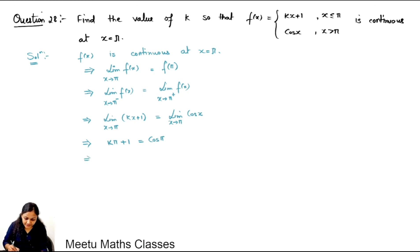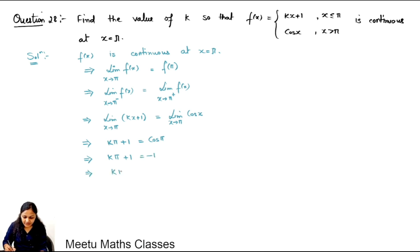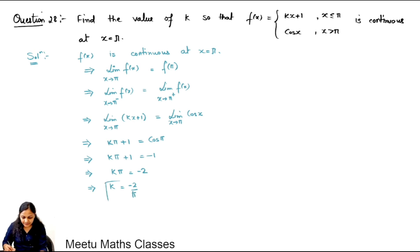By direct substitution, kπ plus 1 equals cos π. Since cos π equals minus 1, we get kπ equals minus 2, so the value of k is minus 2 upon π.